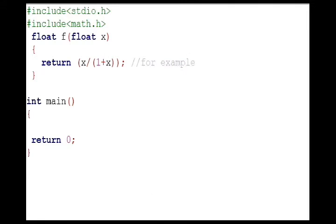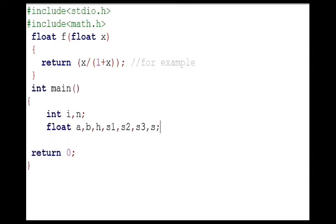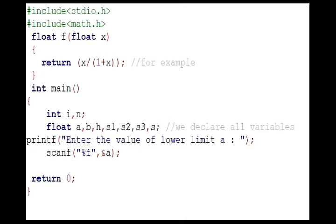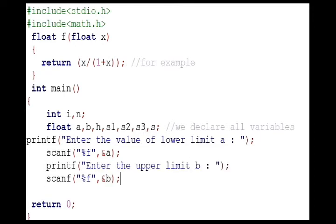Now all the variables should be declared here that will be used in the program. i and n are integers, as n is the number of intervals and i is for counting, so that will always be an integer type. Other variables may not be integers, so we use float for them. The printf function gives message to users to enter data, and scanf function reads the data entered by the user and stores the data in the variables.